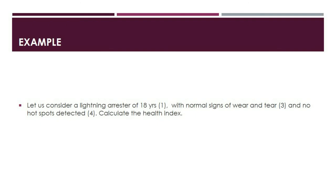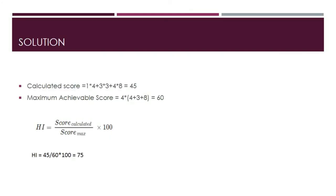Let us go over an example. Consider a lightning arrestor of 18 years, which gives a rating of 1 for service age, with normal signs of wear and tear giving a rating of 3 for visual inspection, and no hotspots detected giving a rating of 4 for IR. The calculated score is the sum of each rating multiplied by its category weight, which equals 45. The maximum achievable score is 4 multiplied by the sum of all weights, equal to 60. The health index equals the calculated score divided by the maximum score times 100, so 45 divided by 60 times 100 equals 75. A value between 70 to 85 is considered good, meaning there may be deterioration of some components but only normal maintenance is needed.